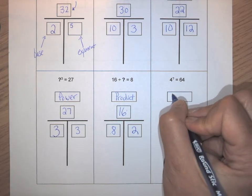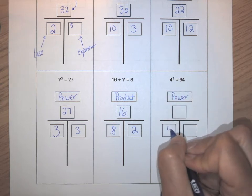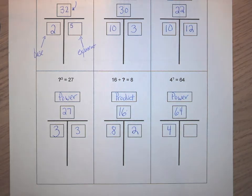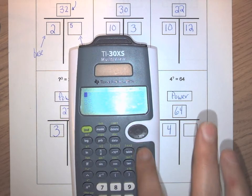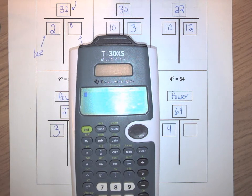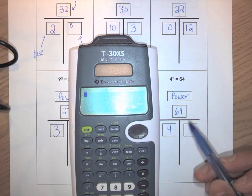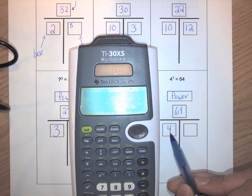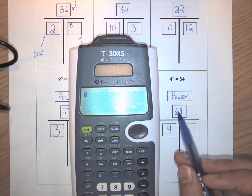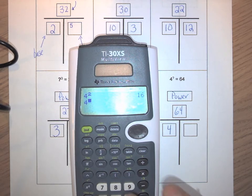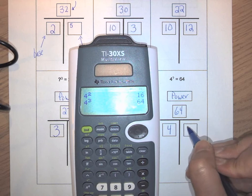I have a missing exponent, so this is a power relationship. I have a base of 4 and a power of 64. Later in the course we'll have more formal ways to use the calculator for this, but for now we can use intuition: 4 multiplied by itself how many times gives me 64? The second power of 4 only gives me 16 — not big enough. The third power of 4 gives me 64, so that's our exponent.